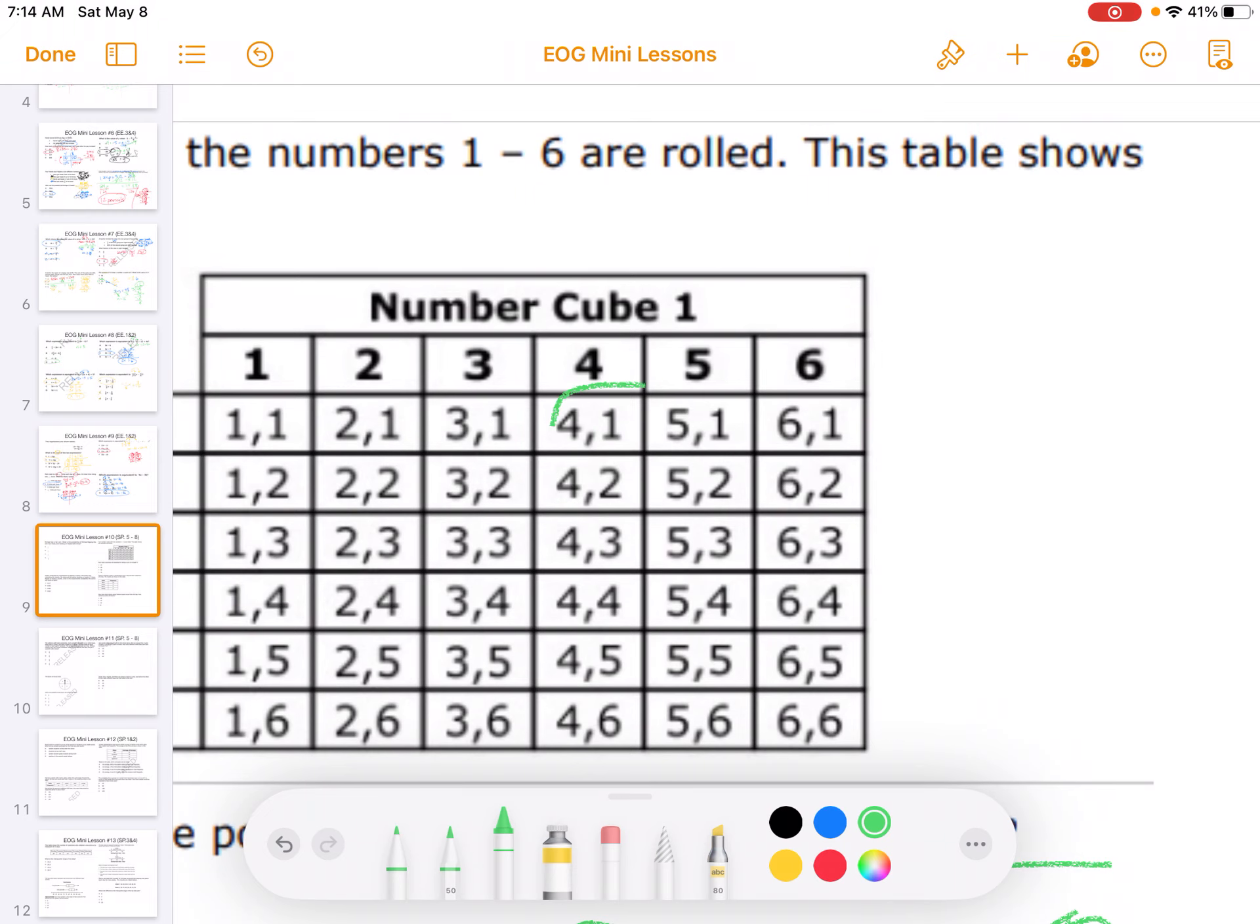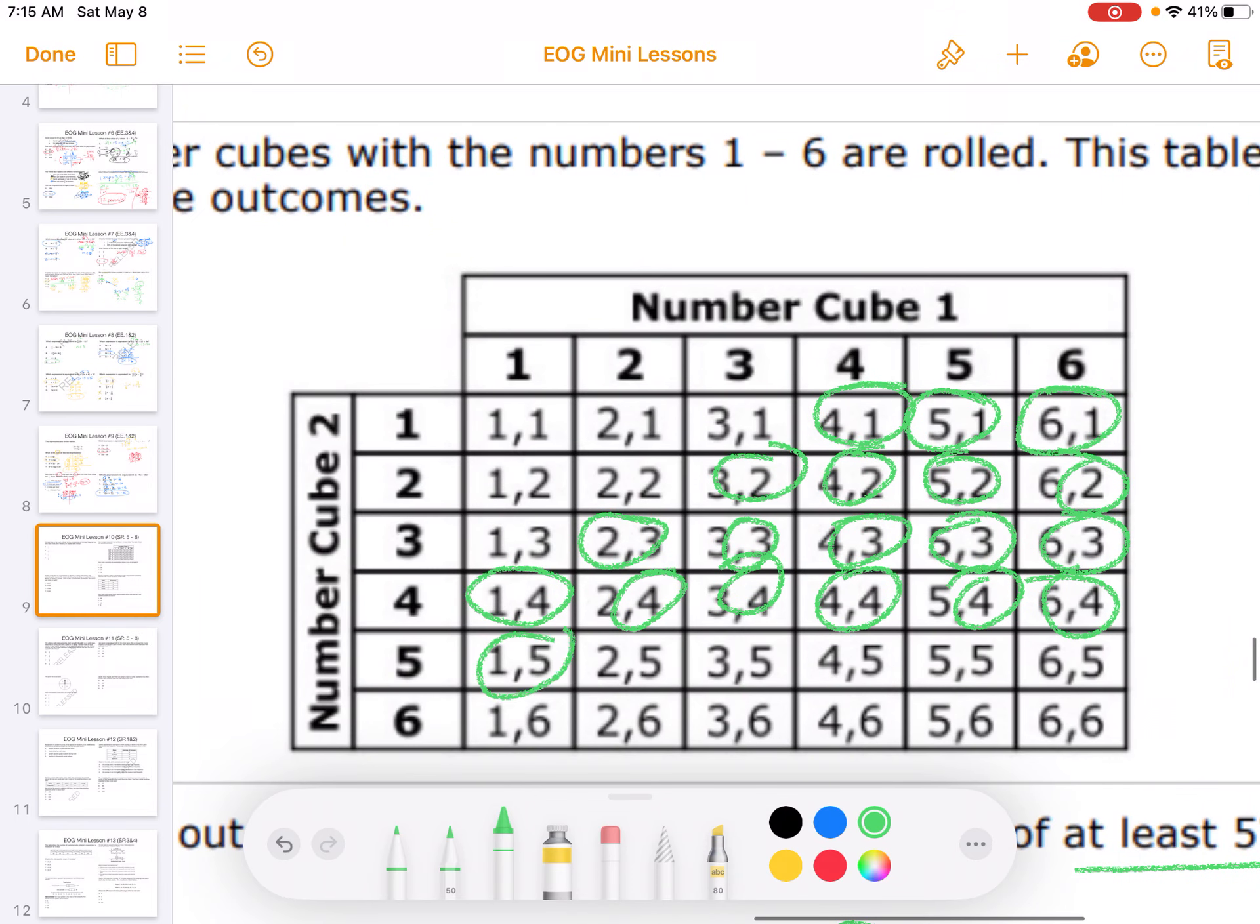Okay, so that would be 3, 4, 5, 6, 7, 8, 9, 10, 11, 12... [counting through outcomes on the chart] ...27, 28, 29, 30.